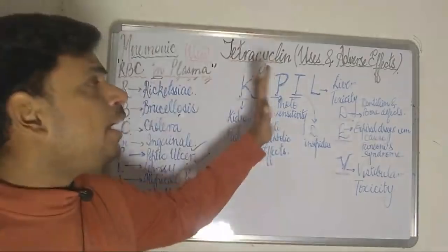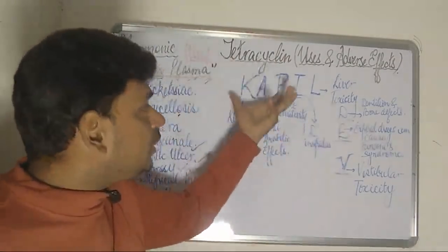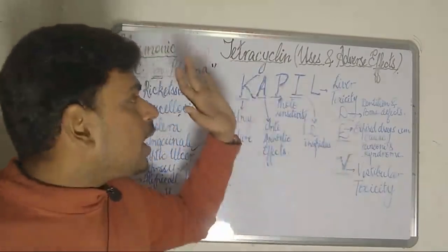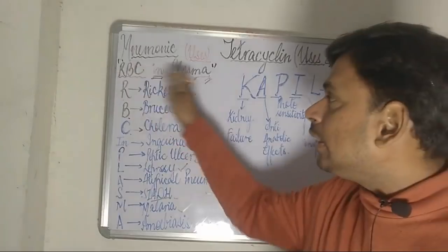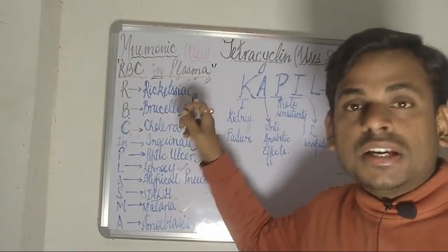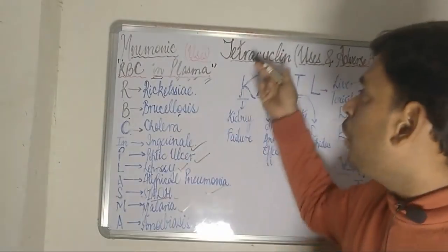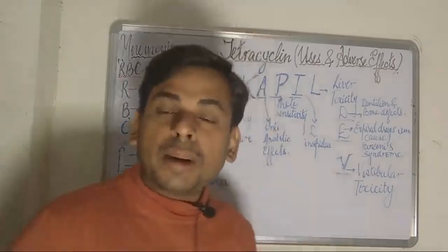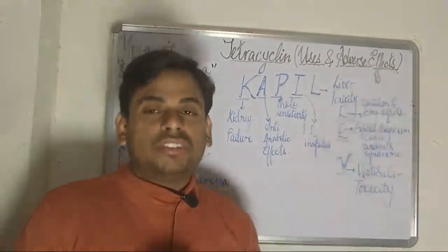Students, just by remembering the initials of the word Kapil Dev, we can very easily write down the adverse effects of tetracyclines. And by remembering the phrase 'RBC in plasma,' we can easily recollect the entire list of uses of tetracyclines. This was a short discussion about mnemonics for the uses and adverse effects of tetracyclines.